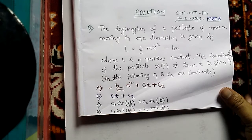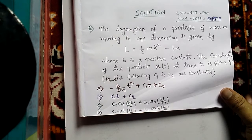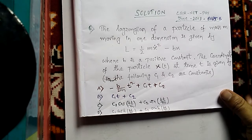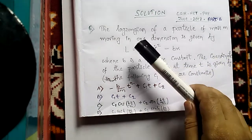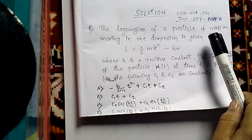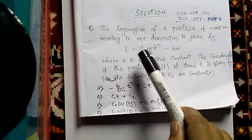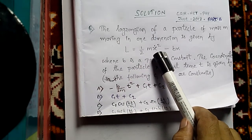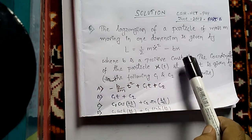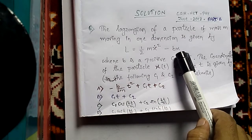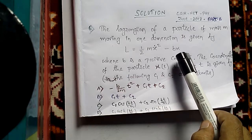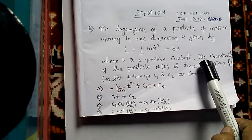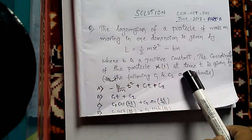Hey friends, this is Vidhan. Welcome to my channel. Today I take the problem of classical mechanics based on Lagrange's equation and using Lagrange's equation to find the solution of x. It's the problem of June 2013 Part B. It says the Lagrangian of a particle of mass m moving in one dimension is given, where m is the mass of the particle, x-dot is the velocity, b is a positive constant, and x is the position or coordinate of the particle. It asks to find the coordinate of the particle x(t) at time t.